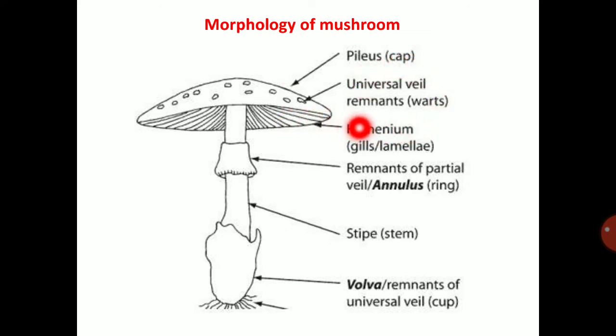The second part is the gills or hymenium. The hymenium is lined with spores.